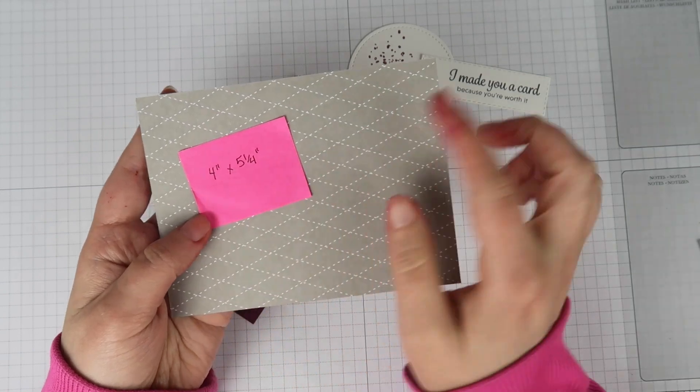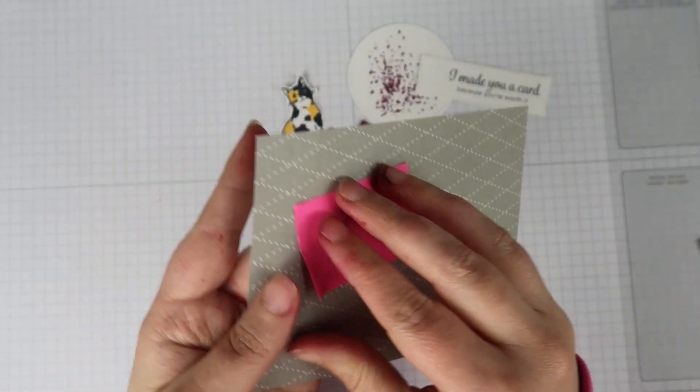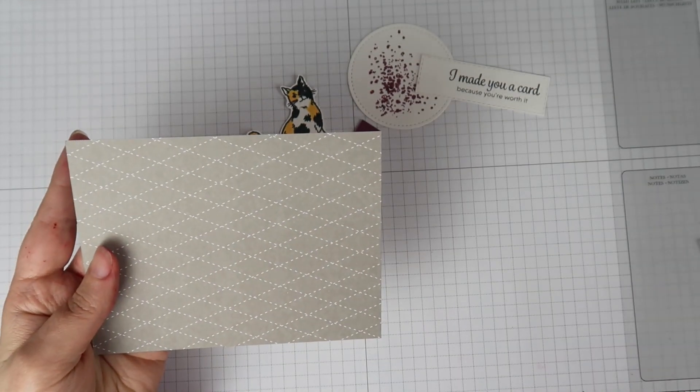Then I have a piece of patterned paper that's 4 inches by 5 and a quarter inches. And this is going to be my main panel for my card.